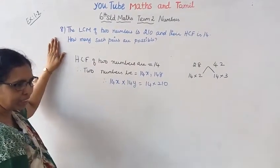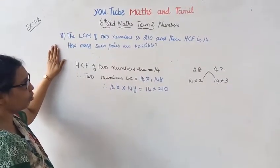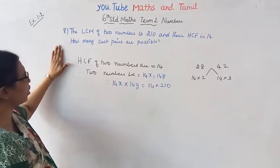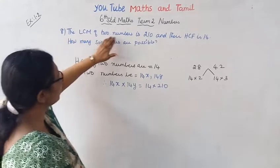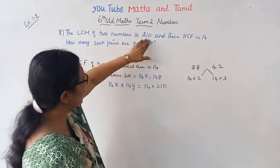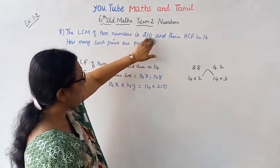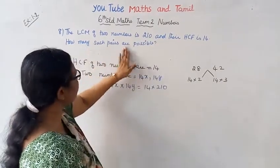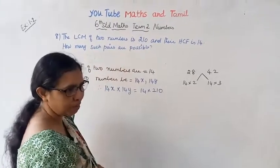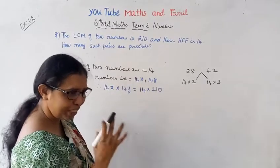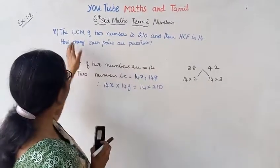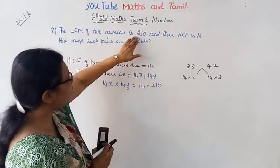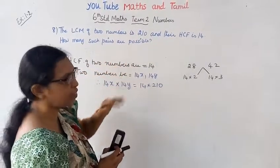The sum of 2 numbers is 210 and the HCF is 14. How many such pairs are possible? The sum is 210 and HCF is 14.